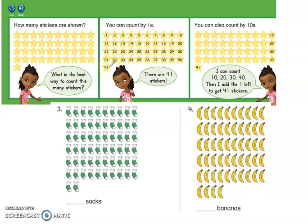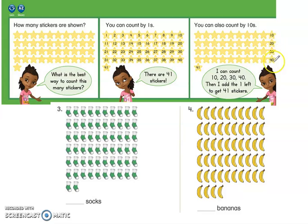Another option is counting by tens. As you can see here with the stars, we know that on one row there are ten stars. So now I know that I can just count by ten: ten, twenty, thirty, forty. But then I have to change my count because there's only one more, so I just count on — forty, forty-one.